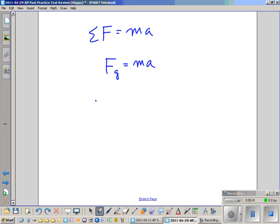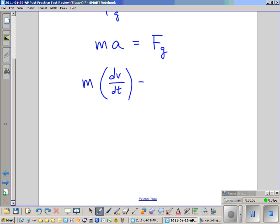Let's flip it around just to neaten things up a little bit. We say ma is equal to the force of gravity. Now, substituting for acceleration, we're going to say that m times dv/dt is equal to the force of gravity, which is G big M little m over r squared. Let's just say r squared because we're going to integrate and have limits of integration.